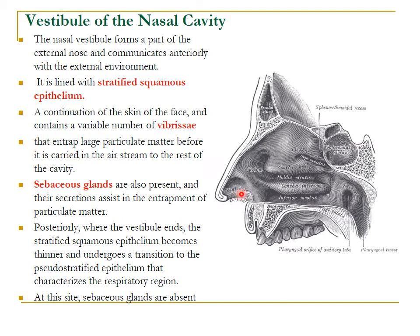The nasal vestibule forms part of the external nose and communicates anteriorly with the external environment. It is lined by skin with small hairs called vibrissae, and is lined by stratified squamous keratinized epithelium. The vibrissae entrap large particulate matter before it is carried into the rest of the nasal cavity. This area also has sebaceous glands whose secretions assist in the entrapment of particulate matter. Posteriorly, the vestibule ends and the stratified squamous keratinized epithelium transitions to pseudostratified ciliated epithelium, where the sebaceous glands are also absent.